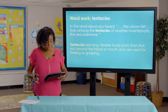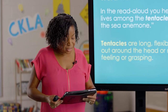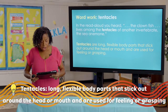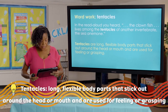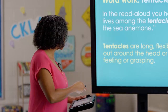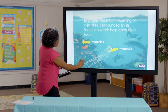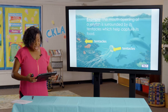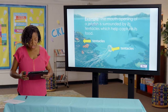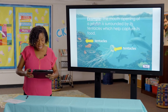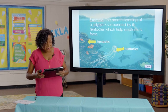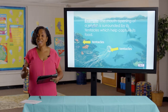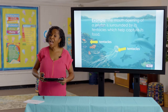Our word work for today is the word tentacles. In the read-aloud, you heard: the clownfish lives among the tentacles of another invertebrate, the sea anemone. Tentacles are long, flexible body parts that stick out around the head or the mouth and are used for feeling or grasping. Plants can also have tentacles. The mouth opening of a jellyfish is surrounded by its tentacles, which help capture its food. The hair-like tentacles of a sundew plant produce a sticky glue which attracts insects, and the tentacles bend inward and trap the insect prey. Tentacles is a noun because it is a thing.